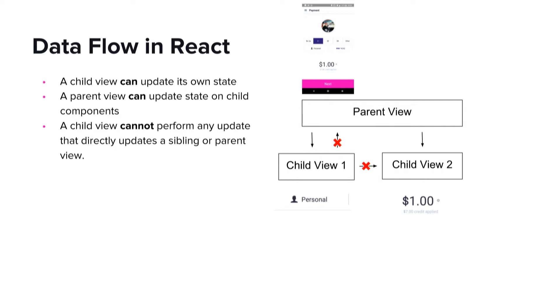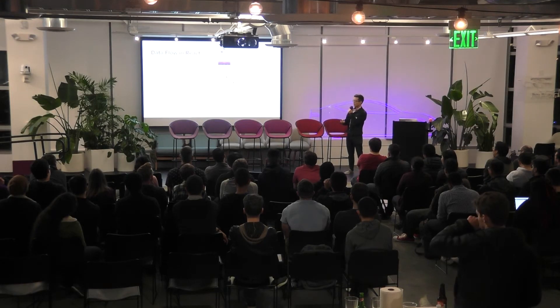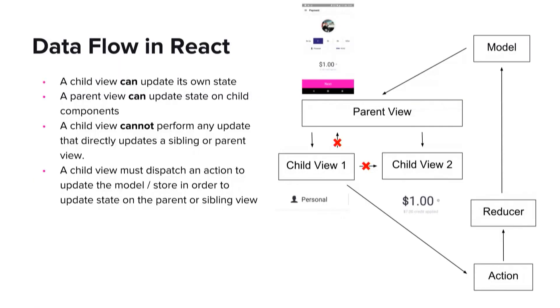Instead, when the user taps on the payment profile, the view can dispatch an action, which then goes through the reducer to update the single source of truth, which is the model. Then when the model changes, the view is subscribed to that change, and we apply the change from the top down, from the parent down to the children.